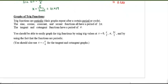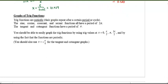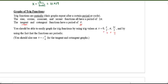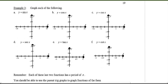Now let's look at graphs of trig functions. Remember they are periodic — they have a certain cycle. Sine and cosine have periods of 2π, and cosecant and secant follow that. Tangent's period is only π. From precalculus you should be able to graph these using key values: 0, π/2, π, 3π/2, and for tangent also π/4.